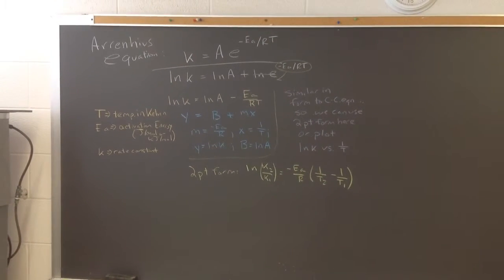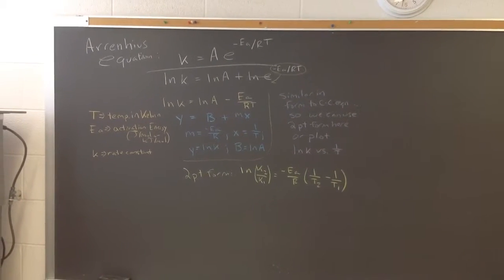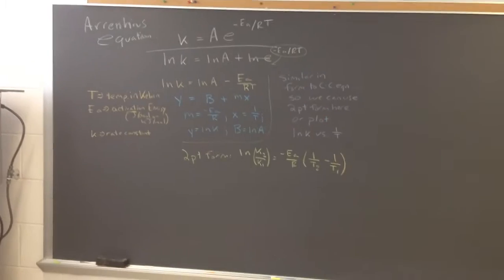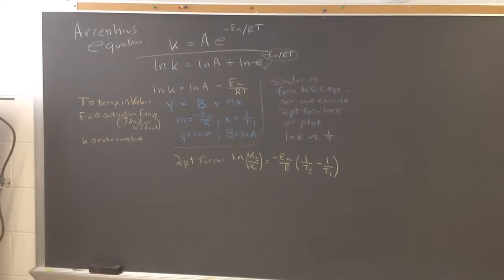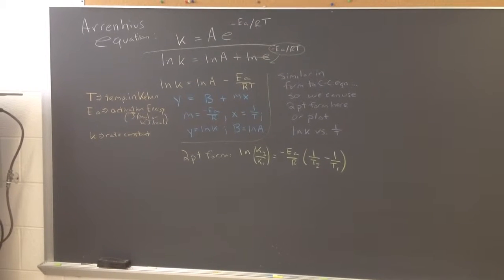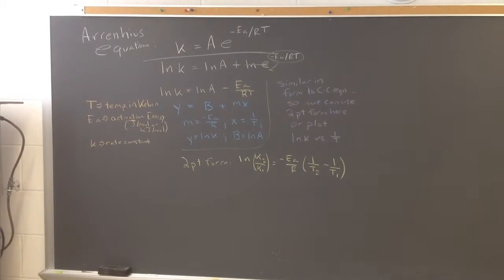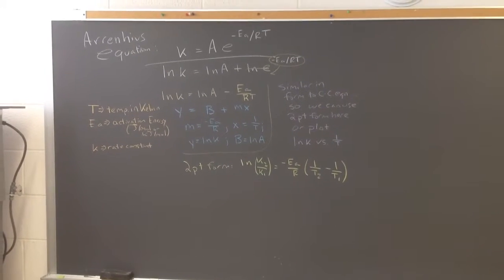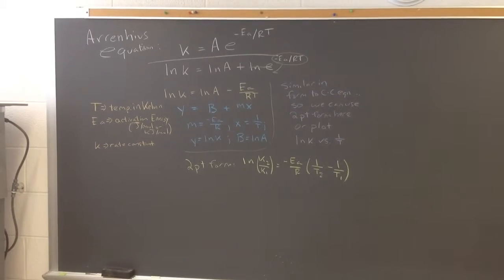So I want to start off looking at the Arrhenius equation. I know I misspelled it looking at it now, but look at the Arrhenius equation. Remember, we saw this the other day. K, the rate constant, which can have different units depending on the order of the reaction, equals A, our frequency factor, times an exponential of negative E sub A over RT.